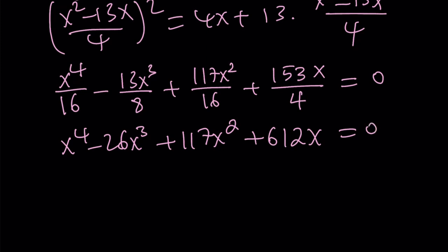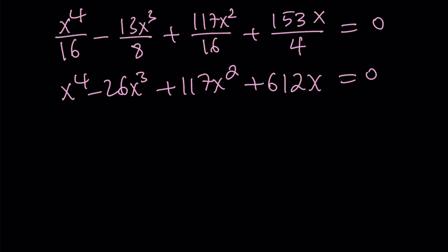And guess what? We keep saying this all the time. x can be factored out and we're going to end up with a cubic, which, again, is not very easy to solve. But if you're looking for integer solutions, you could use the rational root theorem, trial and error. But I'm going to spare you the trouble and give you the solutions. So this quartic equation can be factored as x times x plus 3 times x minus 12 times x minus 17.